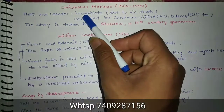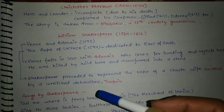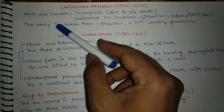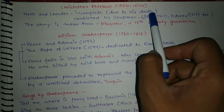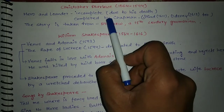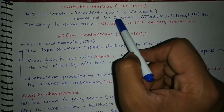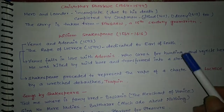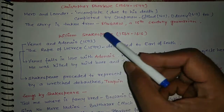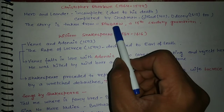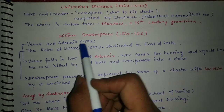Christopher Marlowe's important works include Hero and Leander, which was an incomplete work due to his death. It was later completed by Chapman, who also translated other works — the Iliad in 1611 and the Odyssey in 1632. This story is taken from Musaeus, a 15th century grammarian.